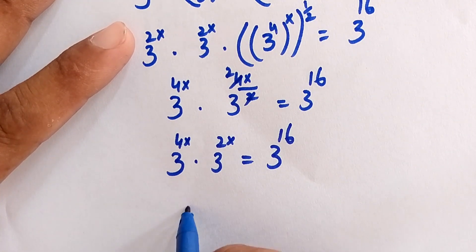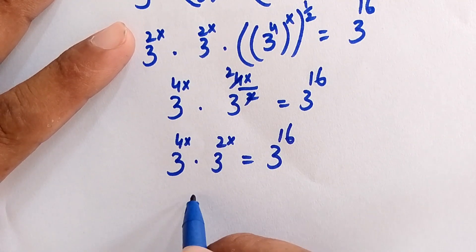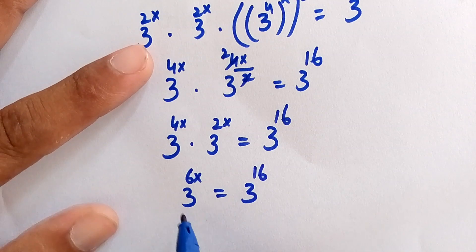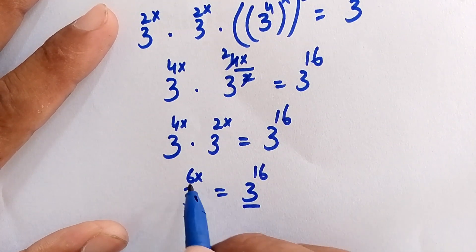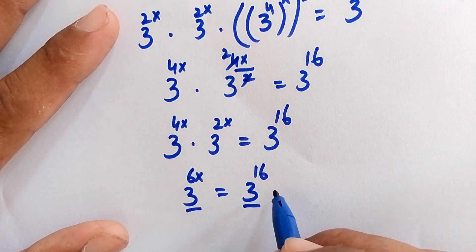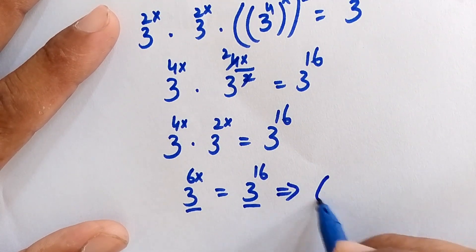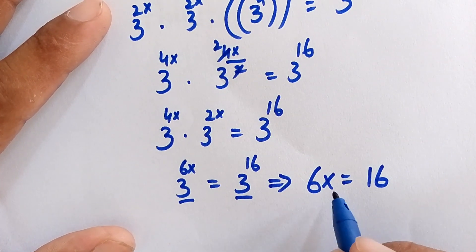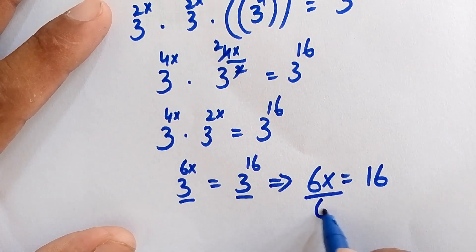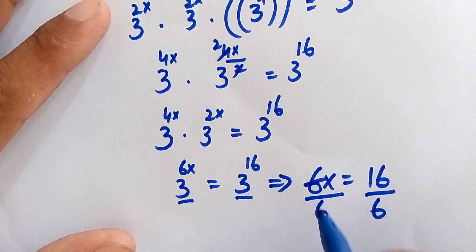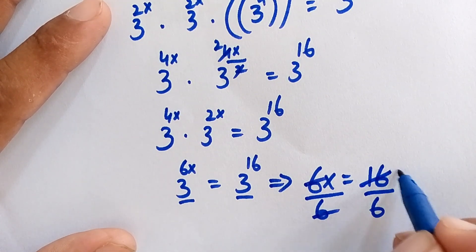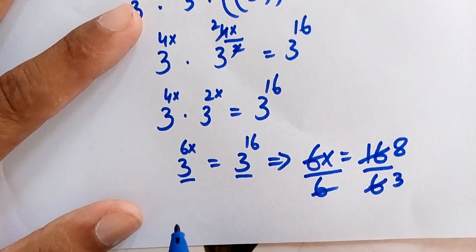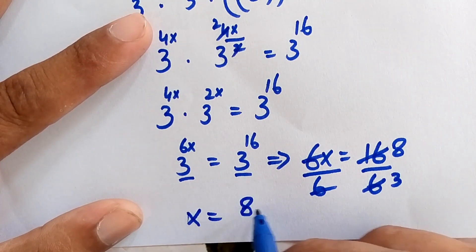Since the bases are the same, the exponents must be equal, so 6x = 16. To find x, we divide both sides by 6. This 6 cancels with the other 6, and since 16/6 simplifies — 8 × 2 = 16 and 3 × 2 = 6 — the value of x is equal to 8/3.